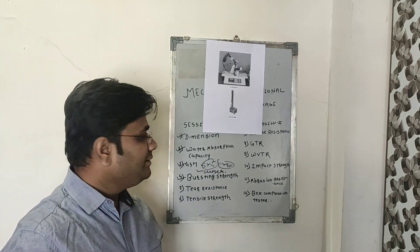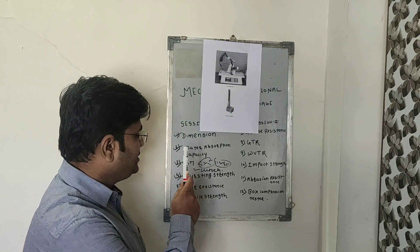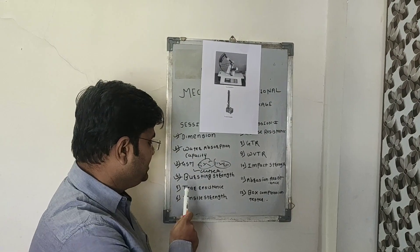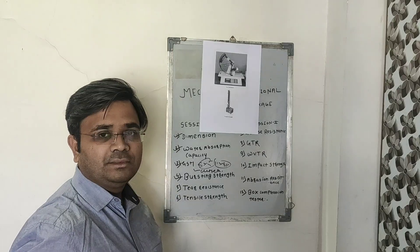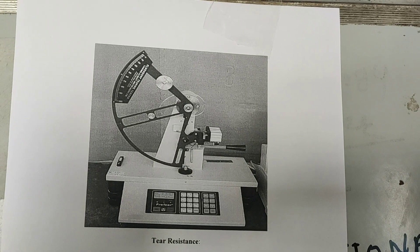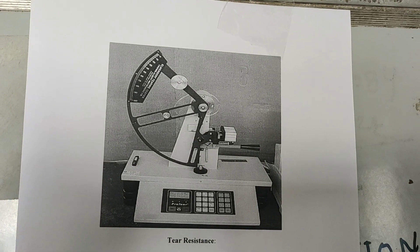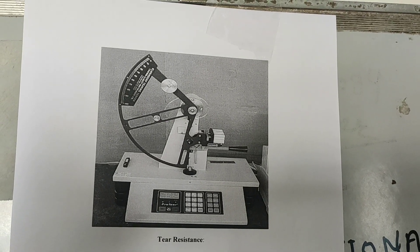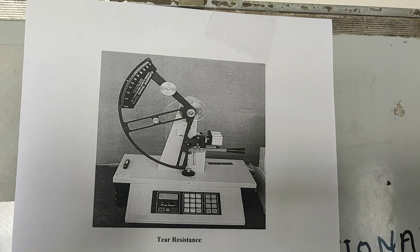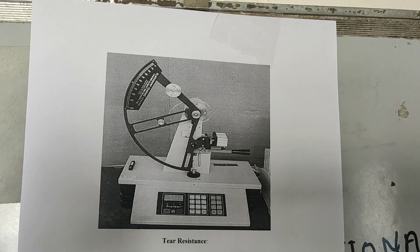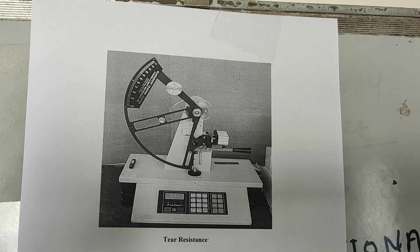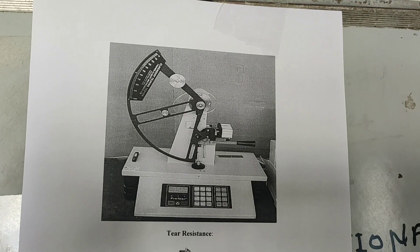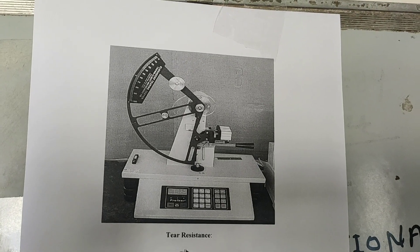So far we have discussed dimensions, water absorption capacity, GSM, and bursting strength. The next test is tear resistance. Papers are tested for tearing resistance in two ways. The first is internal tearing, where the energy required to propagate an internal tear is measured.